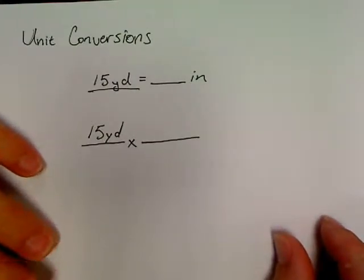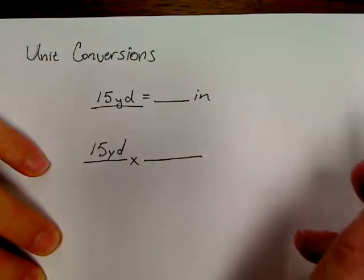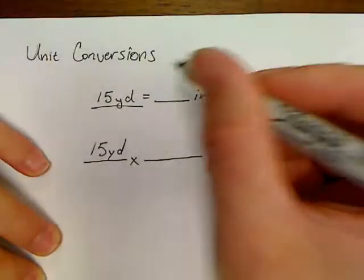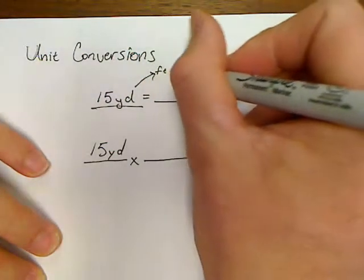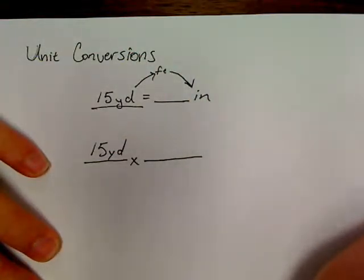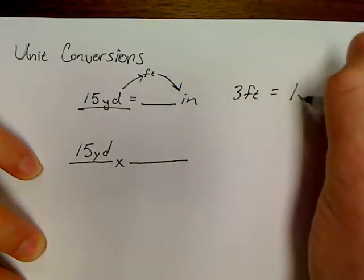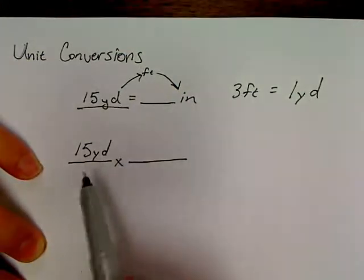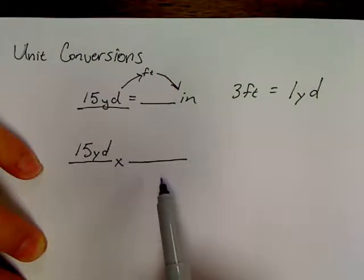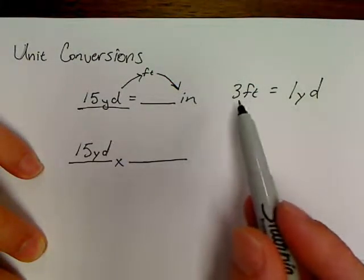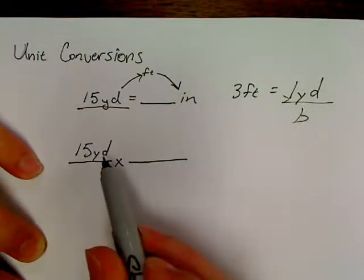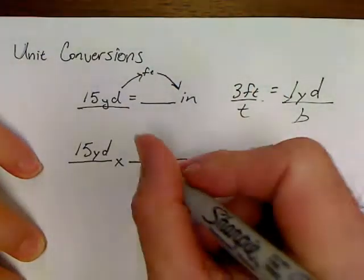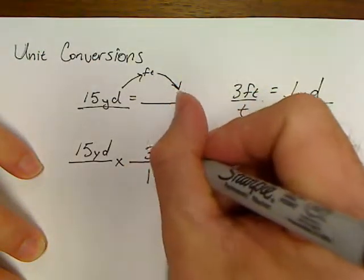In order to do this, we just need to know our conversion factors. What do yards and inches have in common? Yards and inches have feet in common. So we're going to go from yards to feet, and then from feet to inches. How many feet are in a yard? Three feet. Your conversion factor is three feet in one yard. Whatever is on top of the last step has to be on the bottom of the next step. So one yard goes on the bottom, and three feet goes on top.